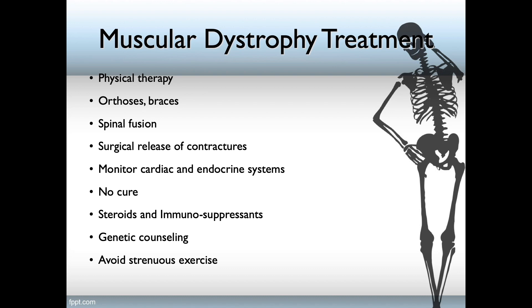Or in some cases the patient will also have contractures, so surgical release of contractures will therefore be indicated. The nurse should monitor cardiac and endocrine systems. Remind the patient and the family that there is no cure and that care would be supportive. Steroids and immunosuppressants have been shown to delay the symptoms. Genetic counseling is required for families who are planning to have babies. And the patient with muscular dystrophy should avoid strenuous exercise because the fatigue will worsen the symptoms.